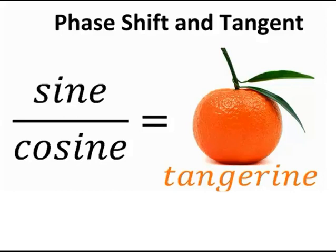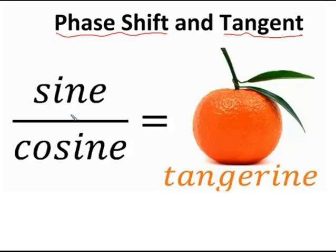We've got a little Owl City, the Technicolor phase going on at the beginning. This lesson, 10.2, is all about the phase shift of our trig function graphs. We are also going to talk about the tangent graph, because in 10.1 we focused on the sine and cosine graph. A little trig humor: sine over cosine is equal to tangent — but is sine over cosine equal to tangerine, maybe?